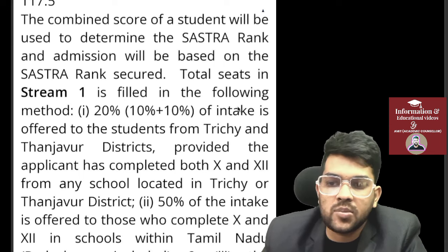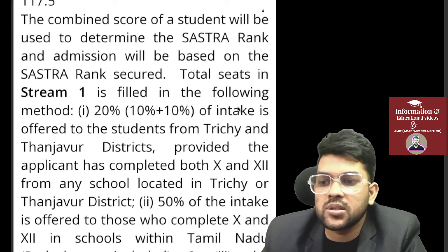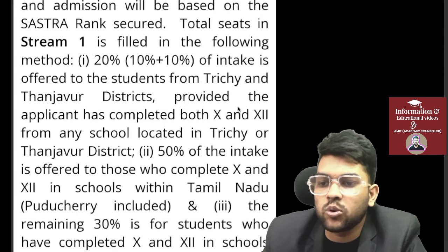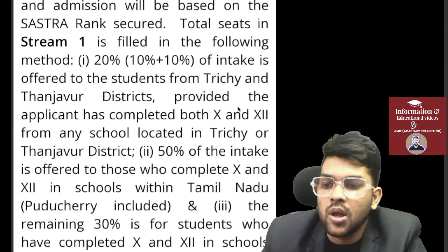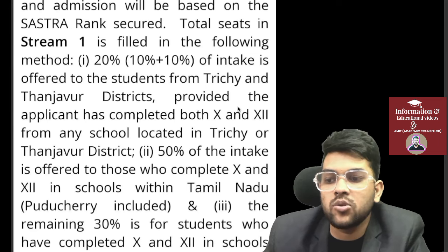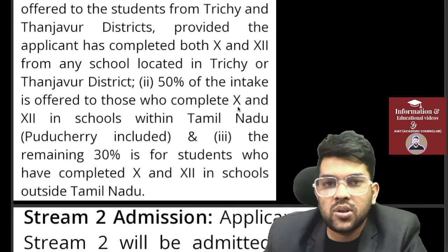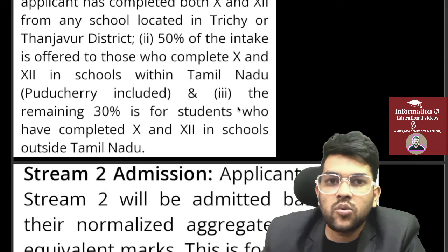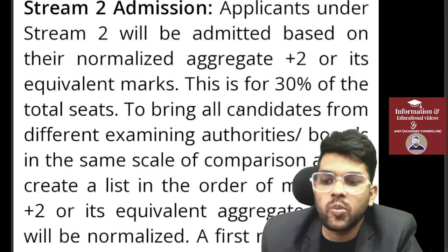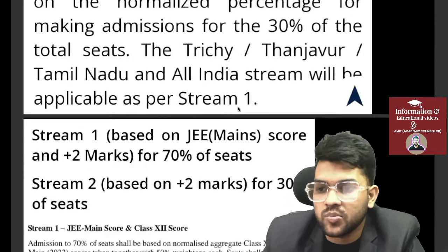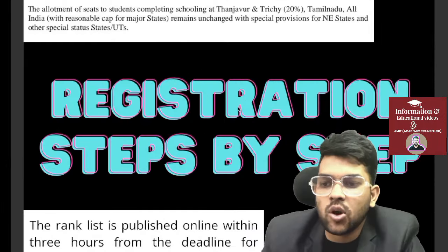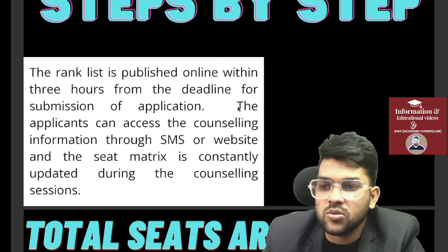In Stream 1, 20% seats are reserved based on two districts — Thanjavur and one other — with 10% each. 50% is offered to those who have completed both Class 10 and Class 12 in Tamil Nadu (Puducherry also included). So total 70% reservation is within the home state, and the remaining 30% is for students from outside Tamil Nadu. Stream 2 has 30% of seats, with the same reservation rules applied.